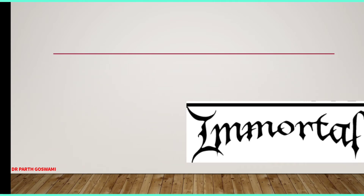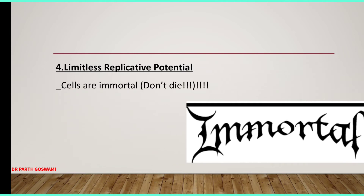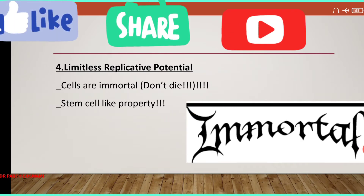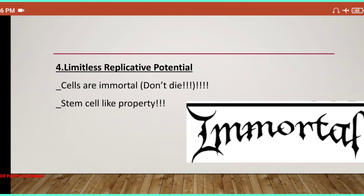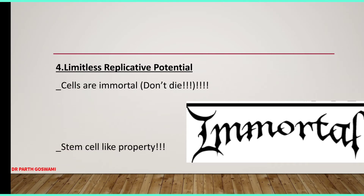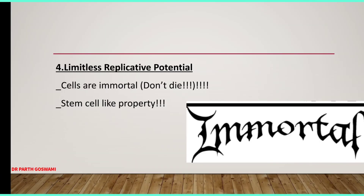The fourth molecular basis of cancer formation is that cells become immortal — they acquire limitless replicative potential. The cells will continuously undergo replication and they become immortal. They will not die because they acquire stem cell-like properties. They will not end their cell cycle and will continuously proliferate. Each normal cell has a replicating potential of only 50 to 60 times.